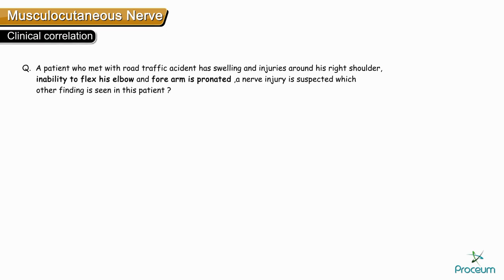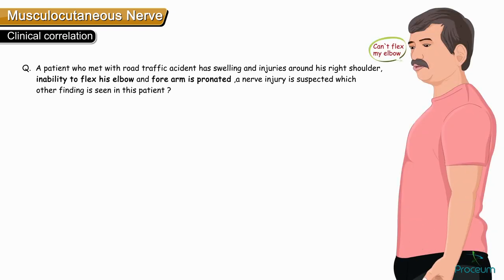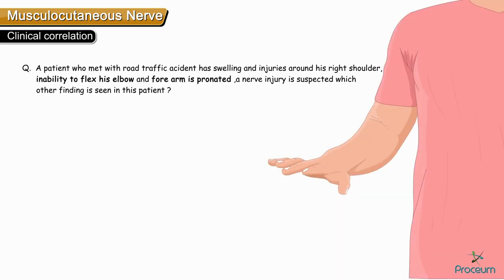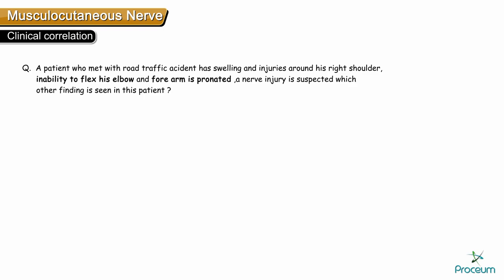Now look at this question. A patient who met with a road traffic accident has swelling and injuries around his right shoulder. The patient has inability to flex his elbow and the forearm is pronated. A nerve injury is suspected. Which other finding can be seen in this patient?